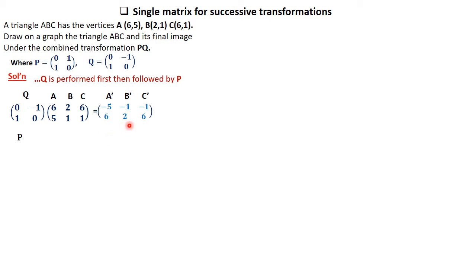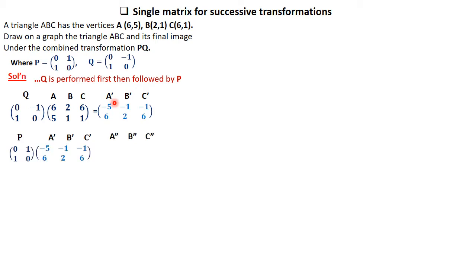This is immediately followed by a pre-multiplication of P — that's matrix P — with the image obtained in the first step, that is the coordinates A', B', C'. That gives us the final coordinates A'', B'', C''. So strictly follow that order: first do the pre-multiplication with Q, and then that image is pre-multiplied again with P.